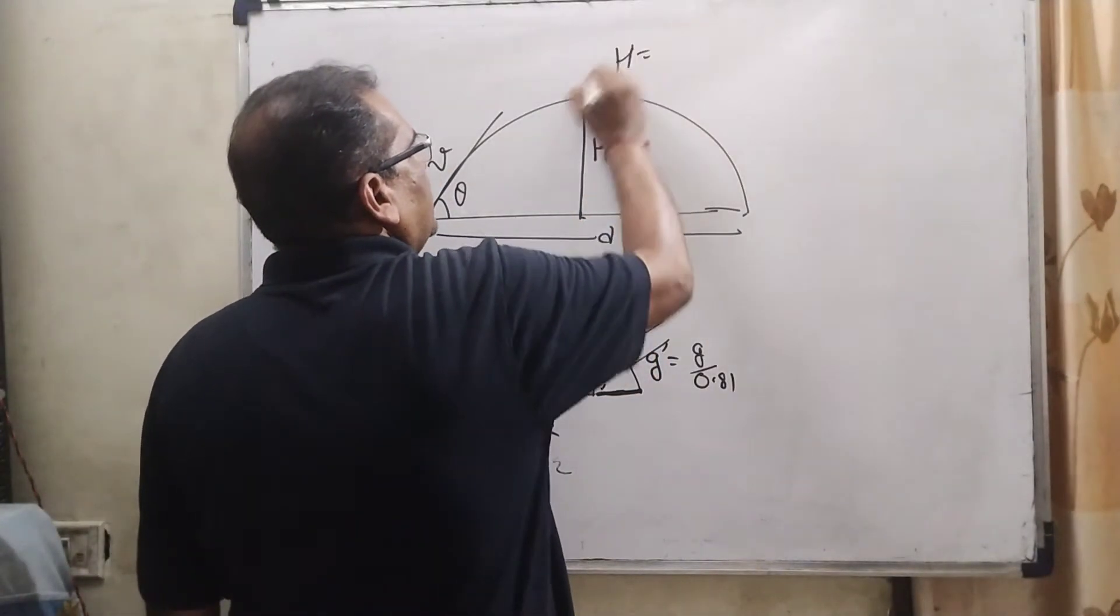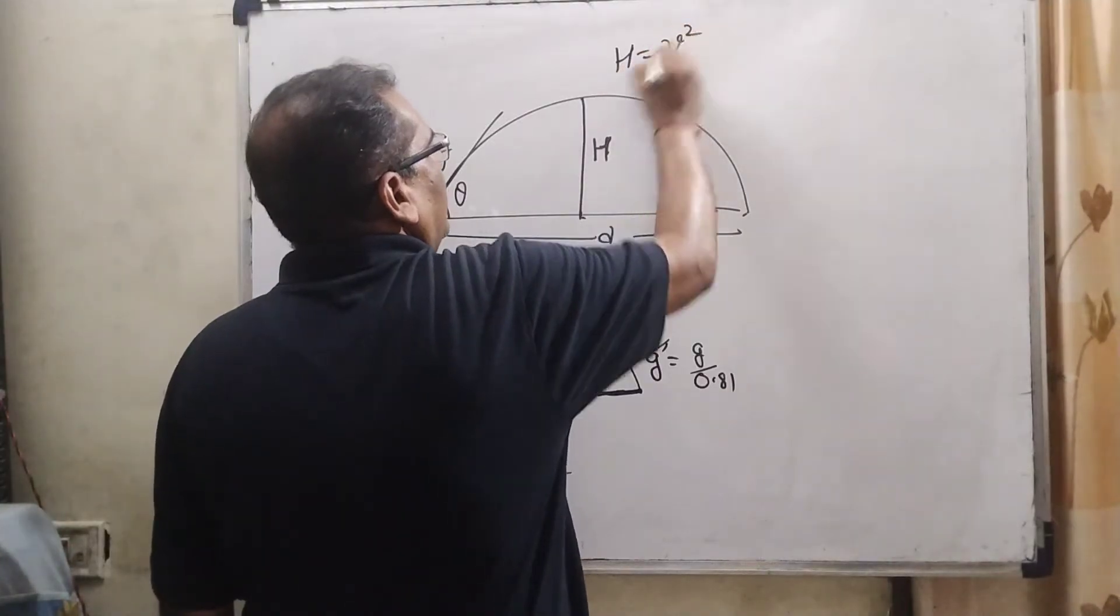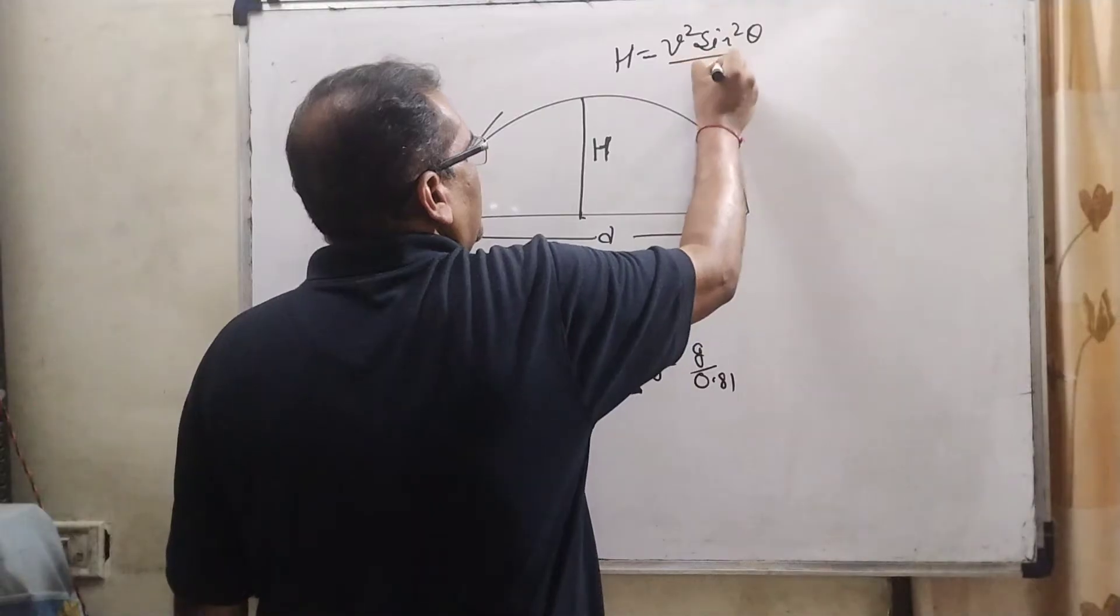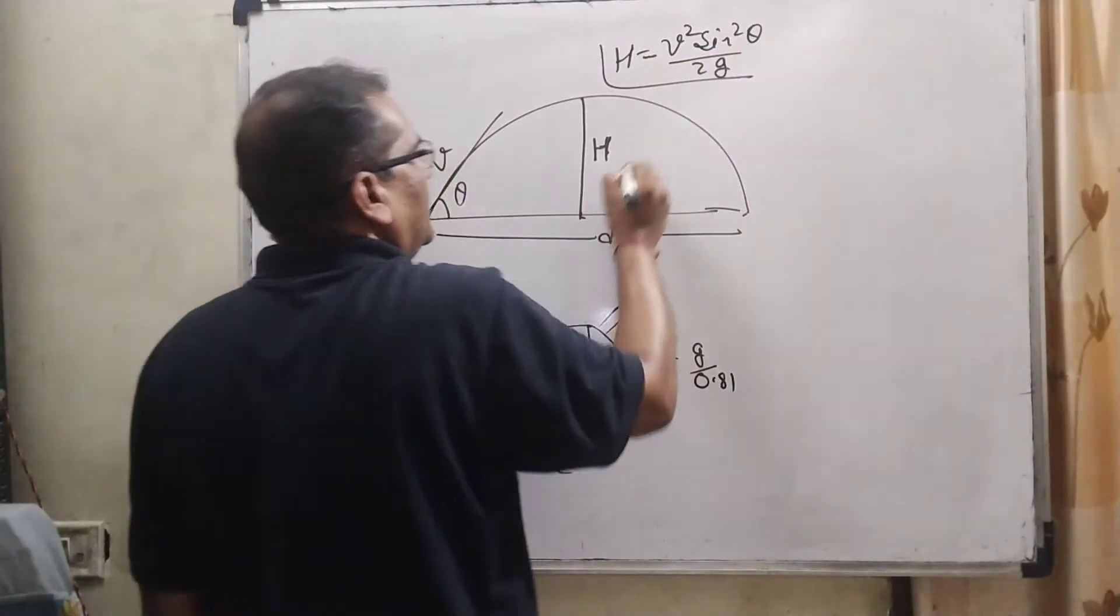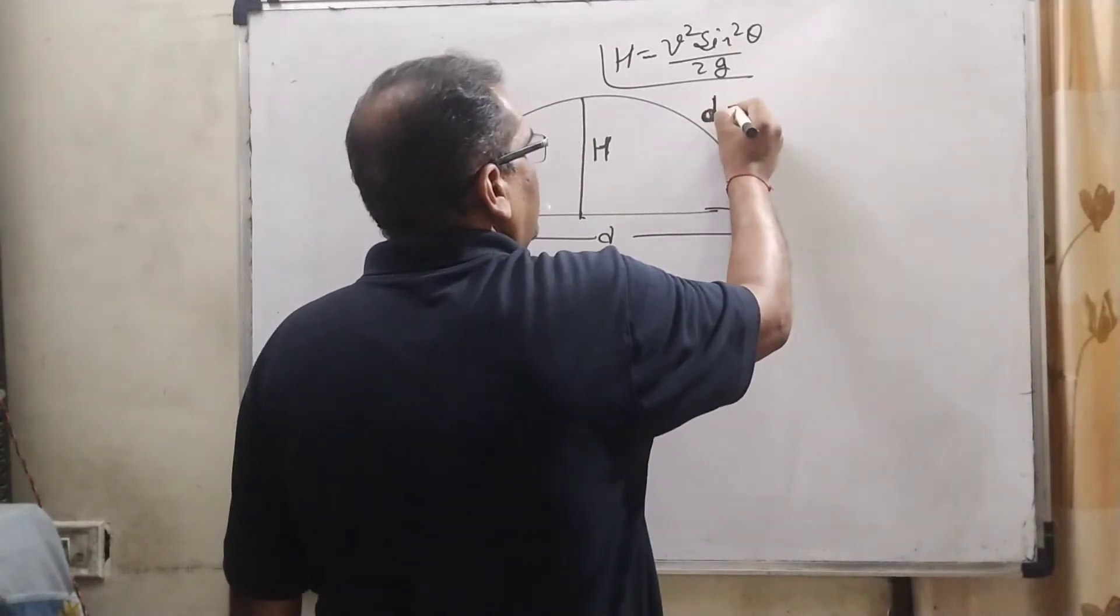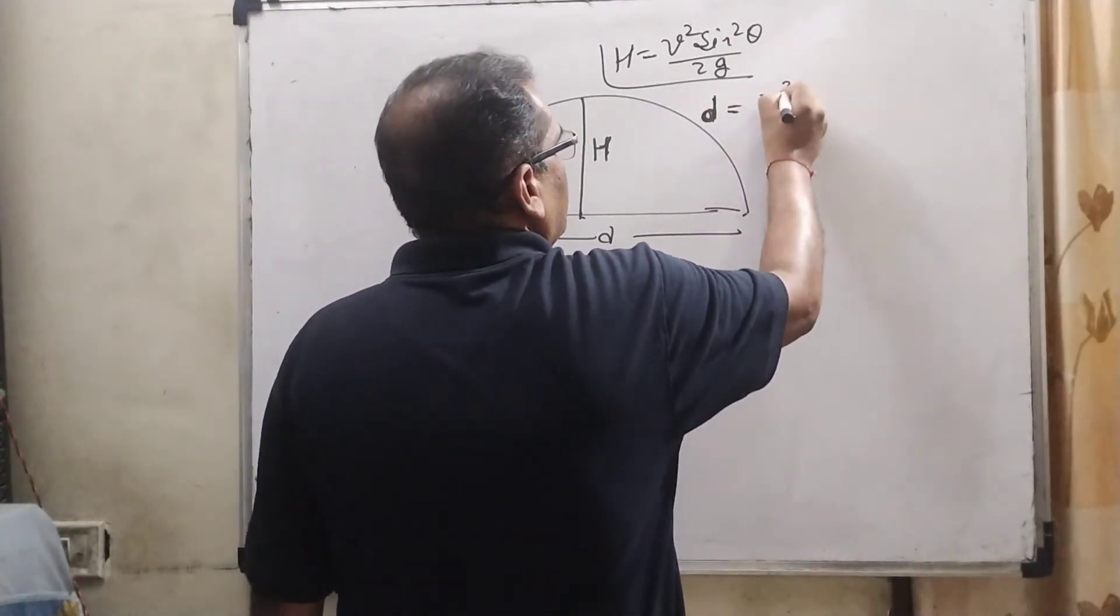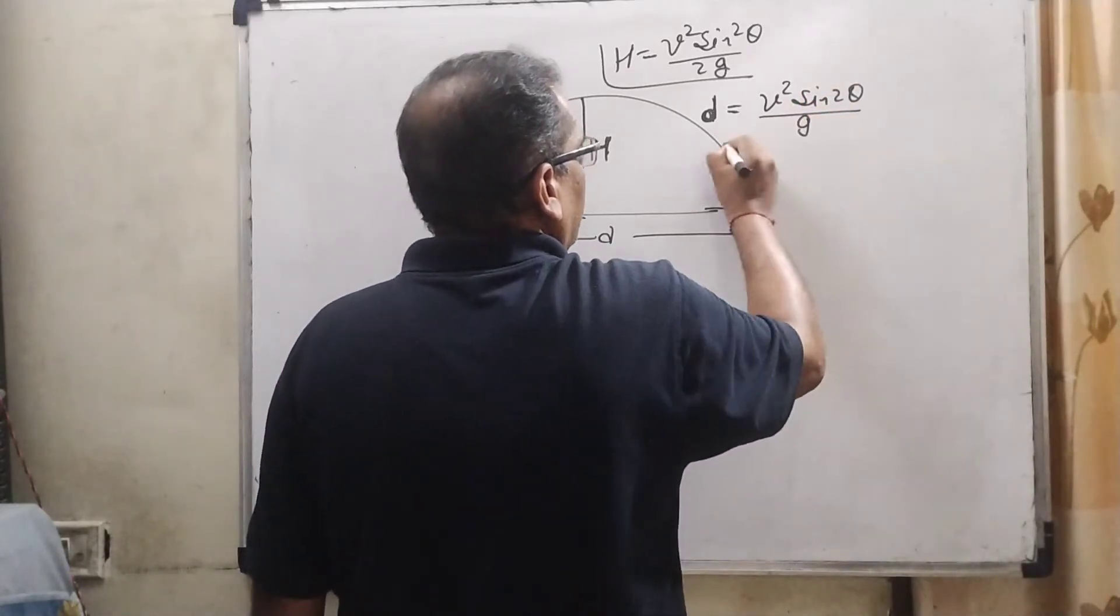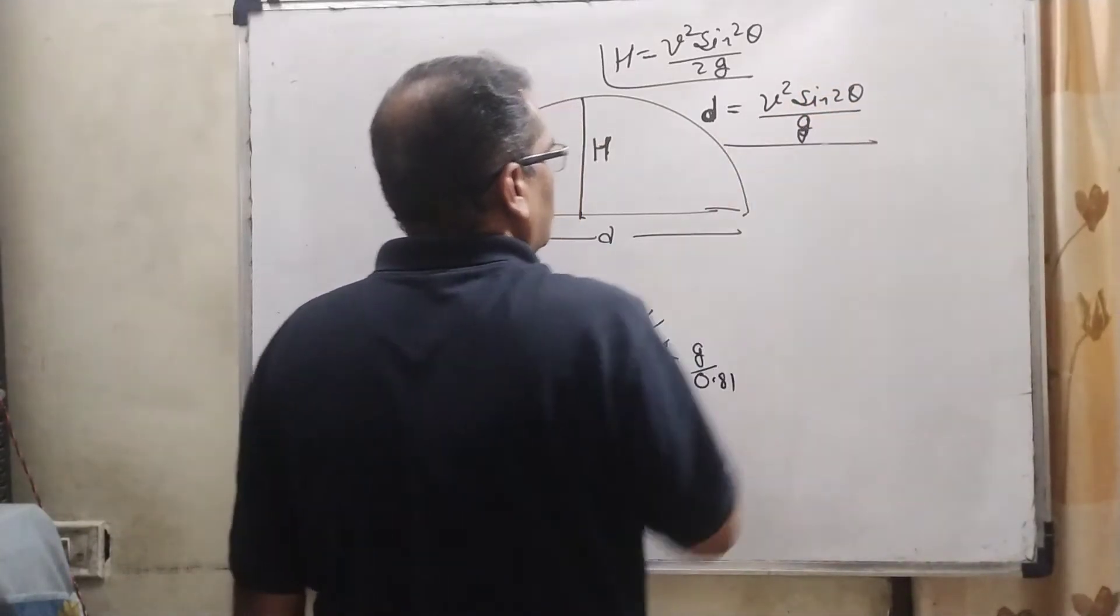In the first case, we know that very well. Here, maximum height is V squared sine squared theta by 2g, and the range D equals V squared sine 2 theta by g.